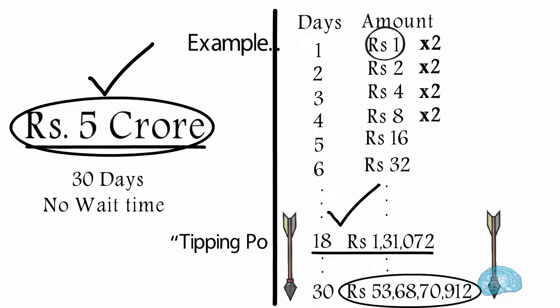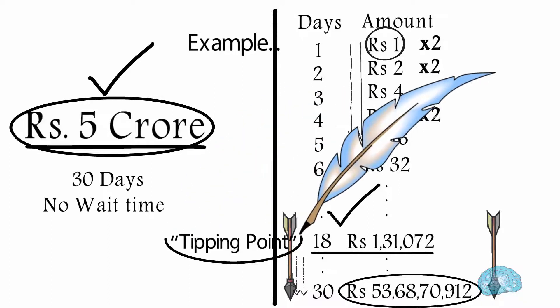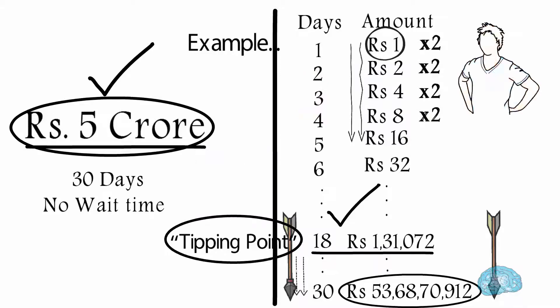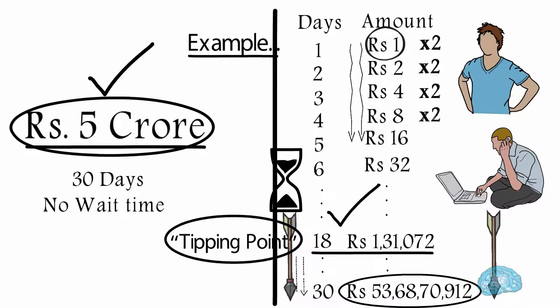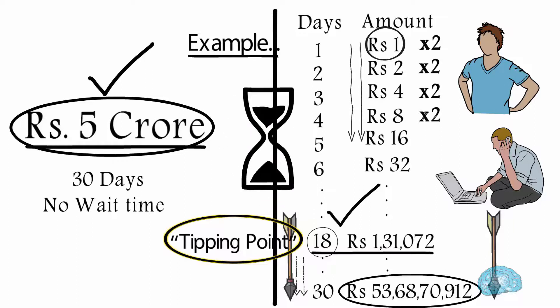Post this, the growth of money will be much faster. During the initial days, it may feel that nothing much is happening until we reach the tipping point, but we need to be patient and consistent. In this example, the wait time was for 18 days—this is where we reached the tipping point. However, in some situations, this wait time could be for months or even years. But once we reach the tipping point, the results will be exponential.